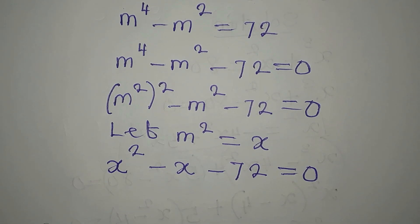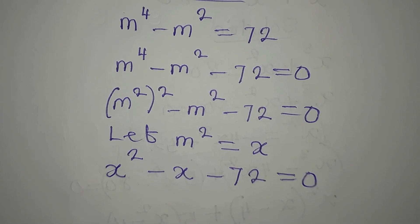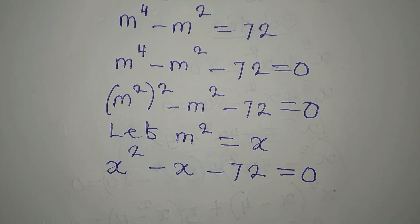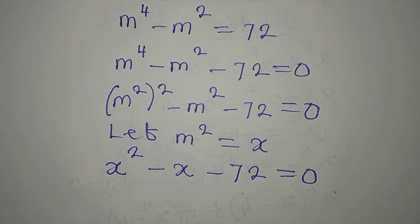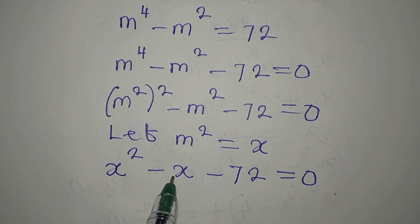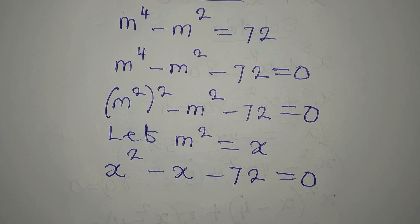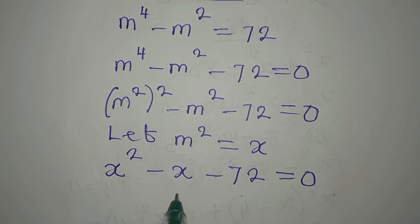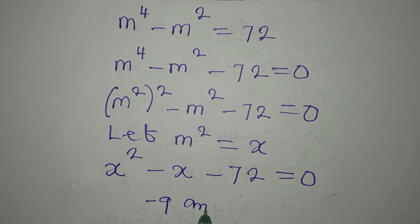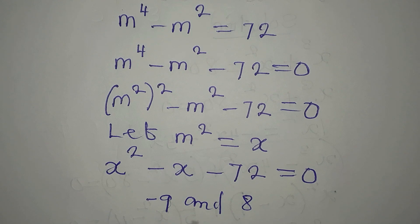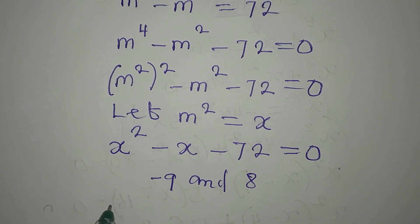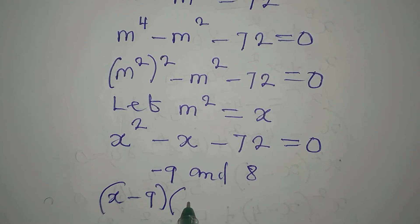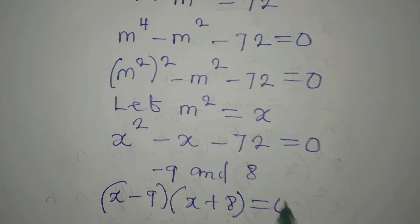This is a quadratic equation that we can solve by factorization. We'll look for two numbers that multiply to get negative 72 and add to get negative 1, because negative 1 is the coefficient of x. The two numbers will be negative 9 and 8. Negative 9 plus 8 gives us negative 1, and negative 9 times 8 gives us negative 72. So the factors will be x minus 9 and x plus 8, giving us zero.